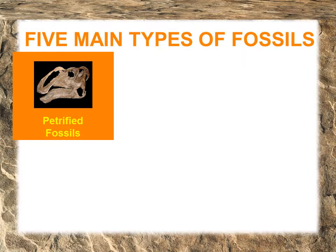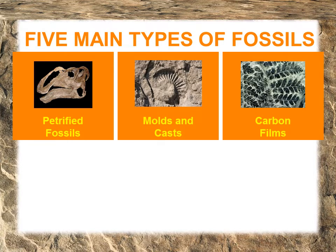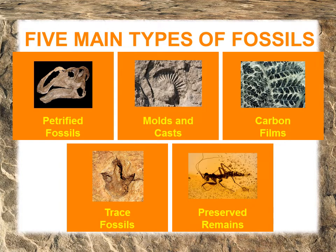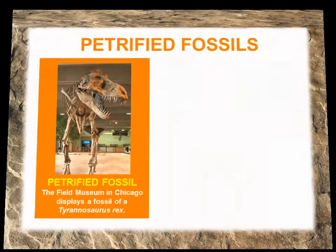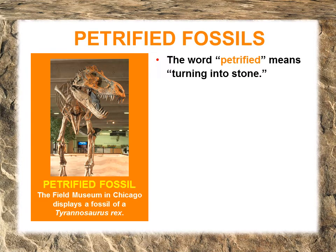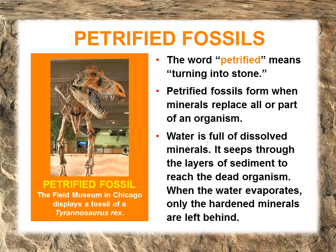There are five main types of fossils. All five are pictured here. On the next slides, I'm going to talk more in depth about each one. First up is a petrified fossil. This means the bones of these animals were turned into minerals. This is, most likely, the kind of fossil you think of when you picture fossils in your head.